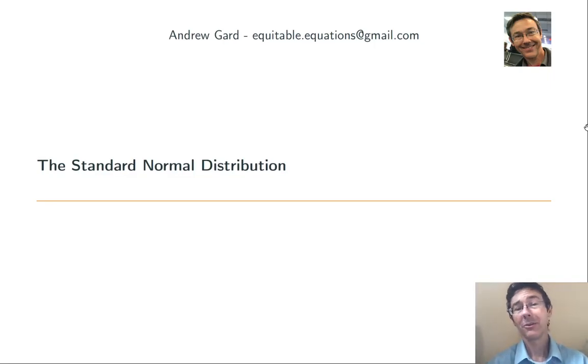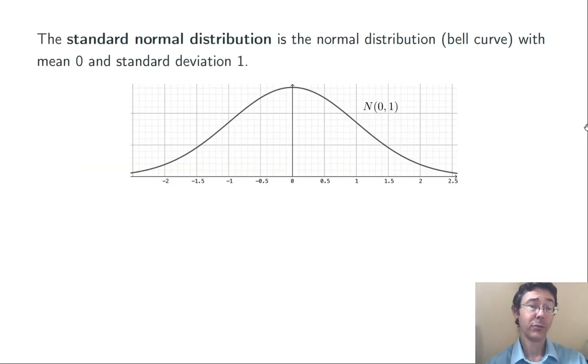Hey everybody, today we're talking about the standard normal distribution. This is just a normal distribution, or bell curve, that has mean 0 and standard deviation 1, like I have pictured here.